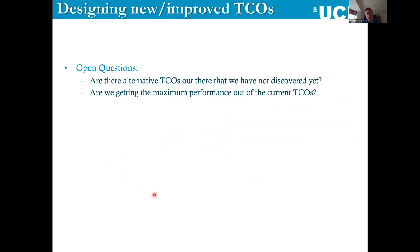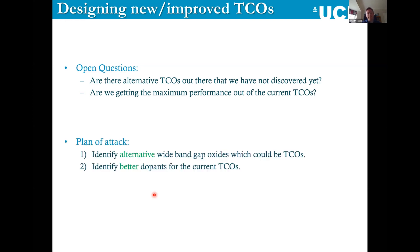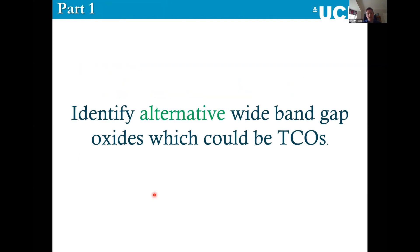When designing new or improved transparent conducting oxides, there are two open questions: are there undiscovered alternatives with similar properties to what we already know, and are we maxing out performance of current TCOs — what can we do to make them better? In our lab, we pursue both: identifying alternative wide band gap systems for new TCOs, and finding the optimal dopant for each existing transparent conducting oxide. The first part of my talk covers alternative wide band gap oxides; then I'll turn to novel doping strategies.